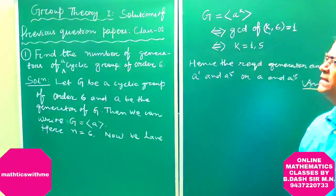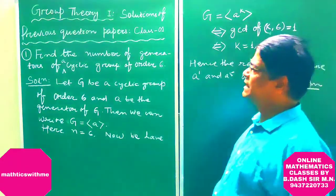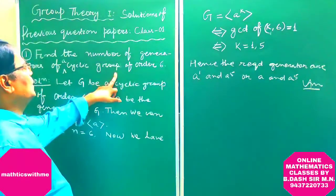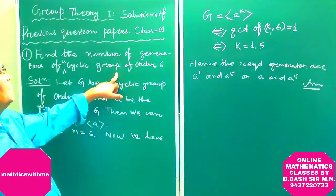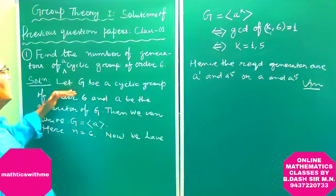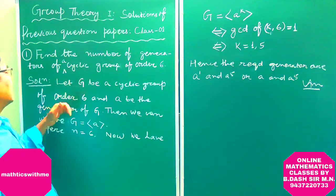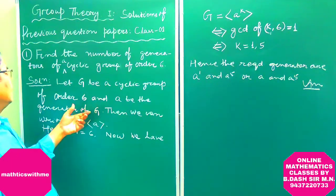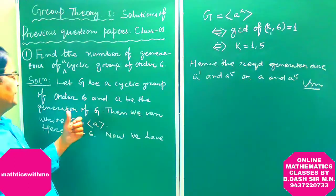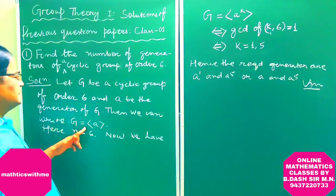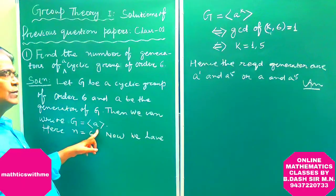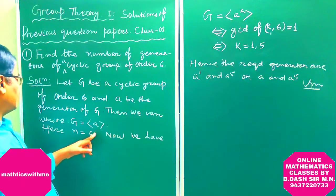To summarize: find the number of generators of a cyclic group of order 6. Let G be a cyclic group of order 6 and A be the generator of G. Then we can write G as the cyclic group generated by A.